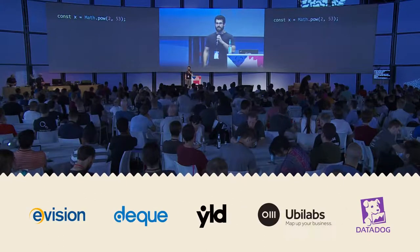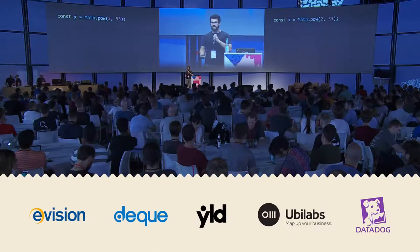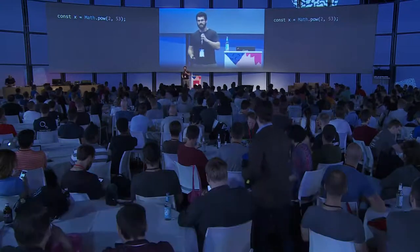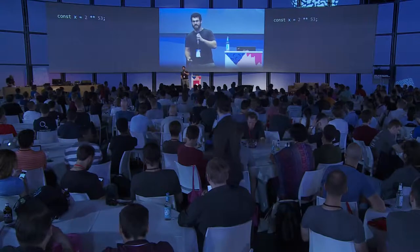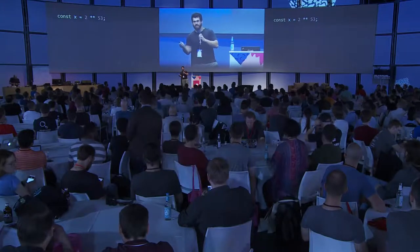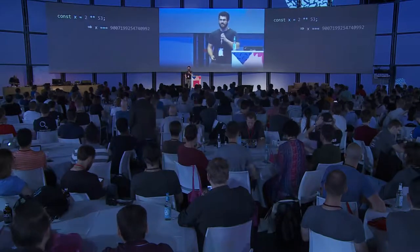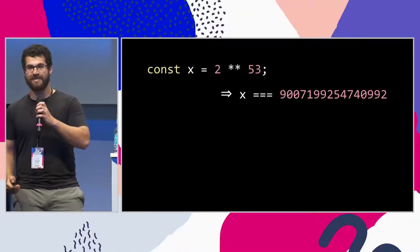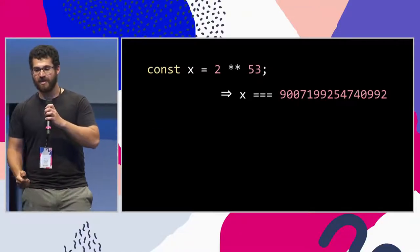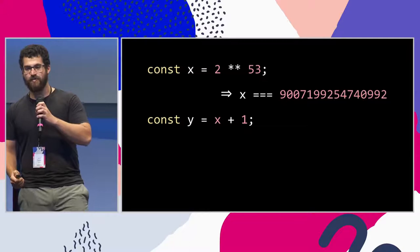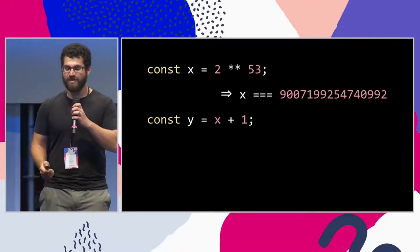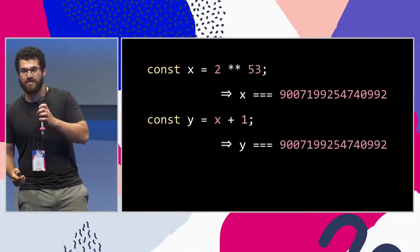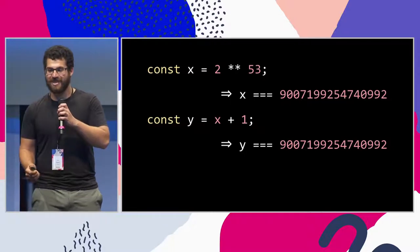Math.pow is this function that can take a number to a particular power. So here, x will be 2 to the 53rd power. Actually now you can just write 2 to the ** of 53. So what does that equal, this huge number starting with a 9 and ending with a 2? What do you get when you add 1 to that? So this 2 to the 53 plus 1 gives you the same number back, this huge number starting with a 9 ending with a 2.